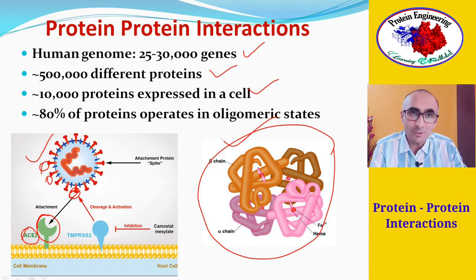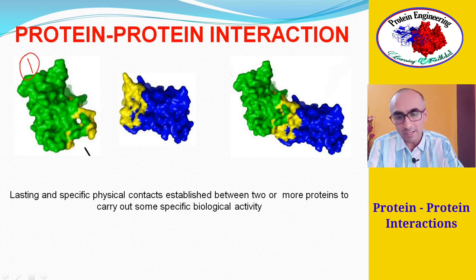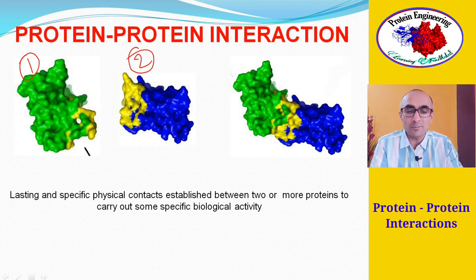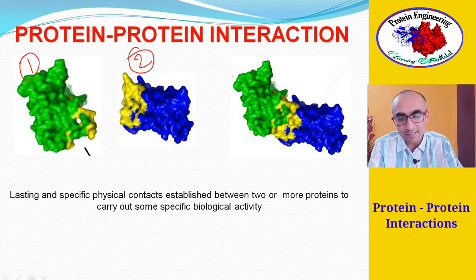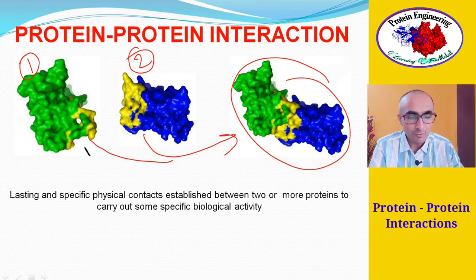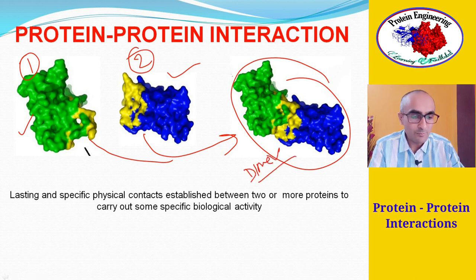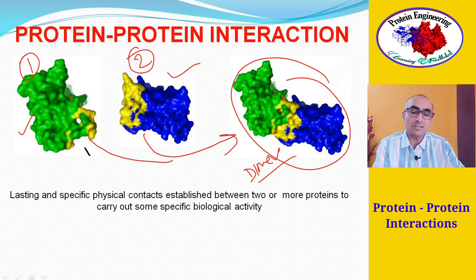Protein-protein interactions are basically attractive forces between more than one protein molecule, responsible for the association of proteins together — also called the quaternary state of proteins. When two protein molecules come together because they have some complementary surface, they associate and form an oligomeric state, such as a dimer. Protein-protein interactions are lasting and specific physical contacts established between two or more proteins to carry out some specific biological activity.